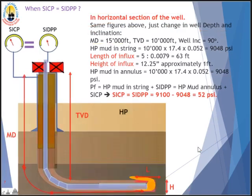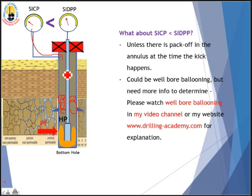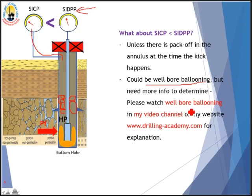When would you see shut-in casing pressure less than shut-in drillpipe pressure? There are two slim chances. Number one: if you have a pack-off on the annulus at the same time as the kick, there is restricted flow in the annulus and you cannot read annulus pressure correctly, so you only see the drillpipe pressure. The second chance is wellbore ballooning. More information is needed to determine if ballooning is occurring — there is a separate video on this topic at drilling-academy.com.